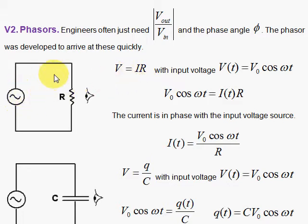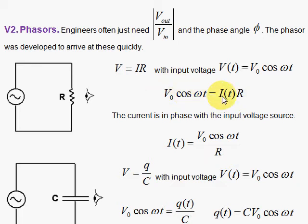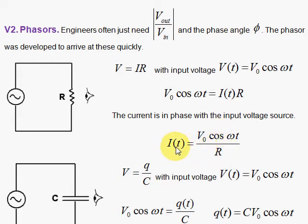When you have the generator doing alternating current, the same thing applies — you get more current through the resistor if the resistance is less. The current is simply V divided by R. Dividing the voltage by R gives the current, and the current is in phase with the voltage. When the voltage is zero, the current is zero. When the voltage reaches its maximum V₀, you have maximum current V₀ over R, fluctuating plus and minus in step.